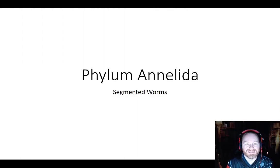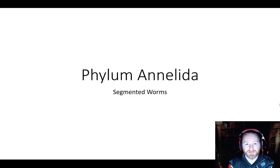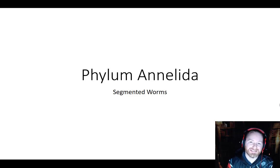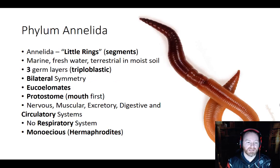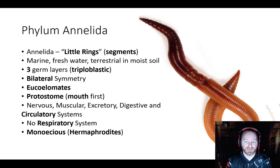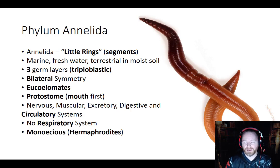Hey gang and welcome back to another exciting episode of Zoology Online. We're going to take a little bit of time and talk about Phylum Annelida, also known as the segmented worms. The name Annelida refers to the concept of 'little rings,' which is what they called the segments these worms are made out of.